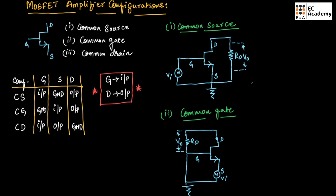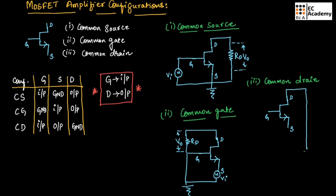The third configuration is common drain. In common drain configuration, gate is connected to input, source is connected to output, and the drain terminal is connected to ground. We connect the drain terminal to ground. Source terminal is connected to output, so we place a resistor RS connected to ground. Across the gate terminal we connect Vin, and across the source terminal we measure the output voltage. This is the general circuit for common drain configuration.